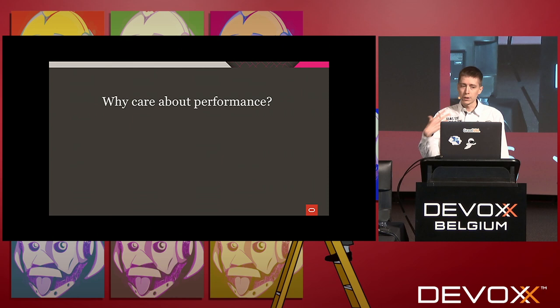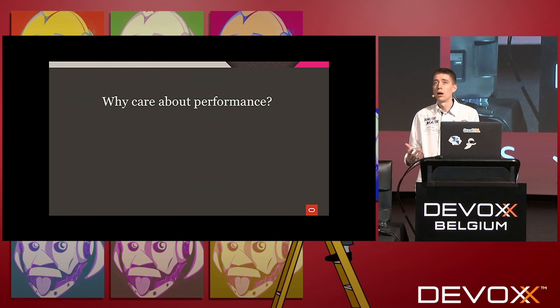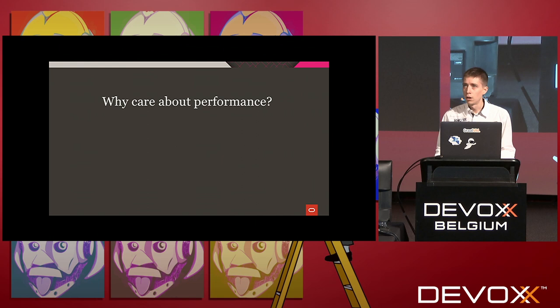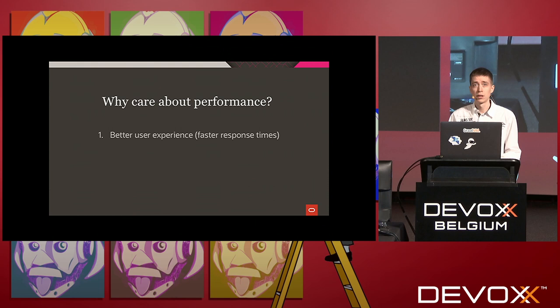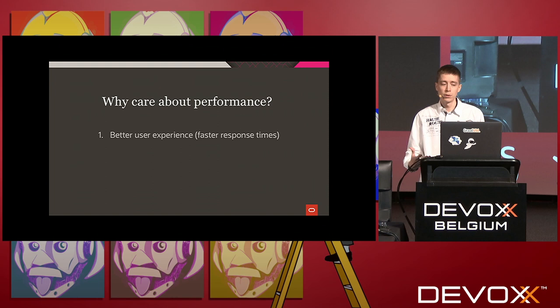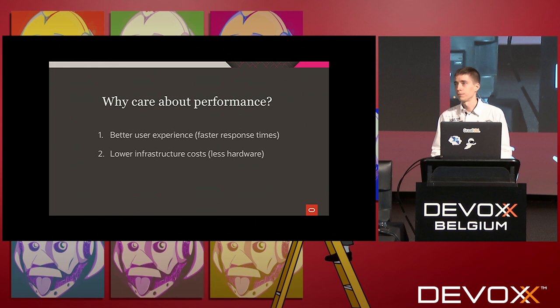One of the things important to think about when talking about performance is: why do we even care about performance, and in what scenarios do we care about it? There are two main components. One reason is for better user experience — maybe users of websites want faster response times, or you have a Spark data science platform and want your batch process to finish faster. The second aspect is to lower infrastructure costs — use less hardware for the same tasks.